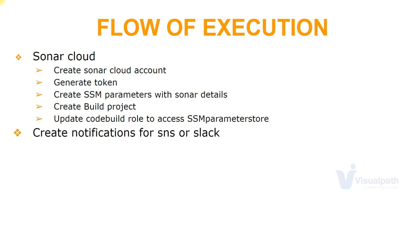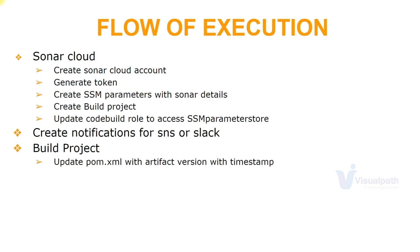Then we'll create a notification — you can do it for SNS notification or Slack; in this project we're going to use SNS notification. Then we'll set up a build project that is going to build the artifact and deploy it to an S3 bucket. We're going to update our pom.xml file with artifact versions with a timestamp, so automatically our artifact will be versioned with the current timestamp. All properties required for this build project, like CodeArtifact information, will be stored in SSM Parameter Store again.